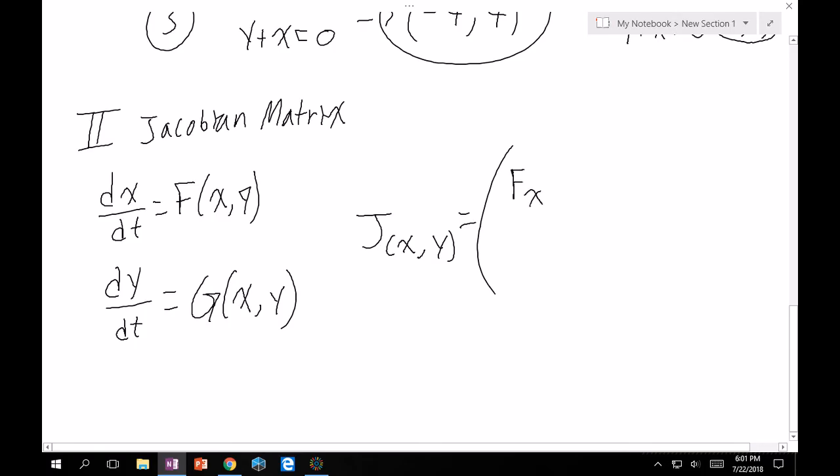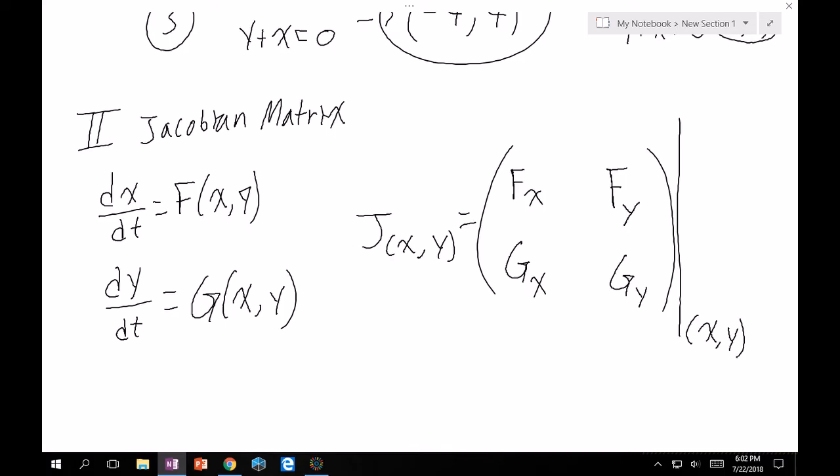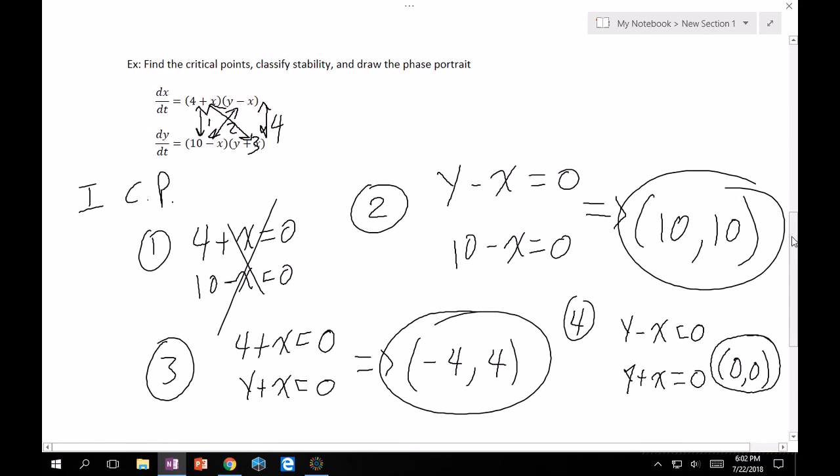To construct your Jacobian matrix, which is a function of x and y, the first element is the f function partial derivative with respect to x. Below it is function g partial derivative with respect to x. This element is f partial derivative with respect to y, and the bottom is g partial derivative of y. You must plug in whatever point you have x, y. It's approximating what the system behaves like because it's like its first derivative.